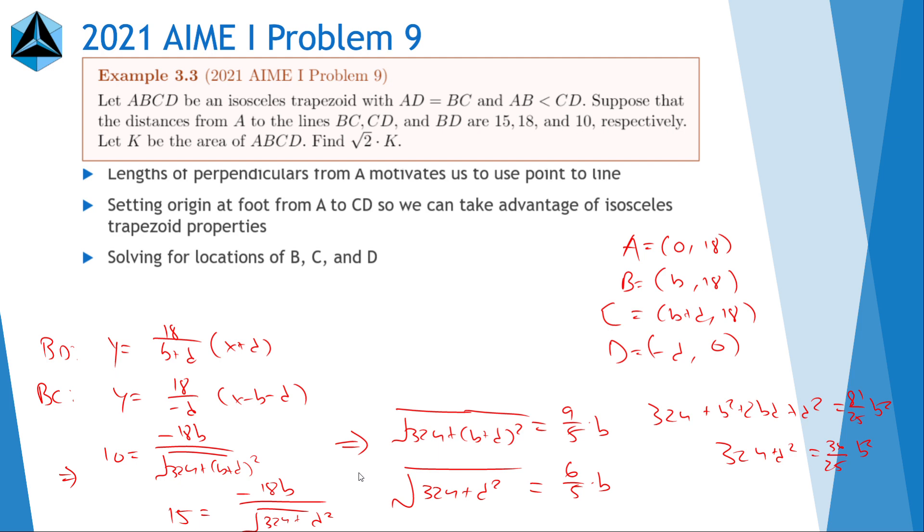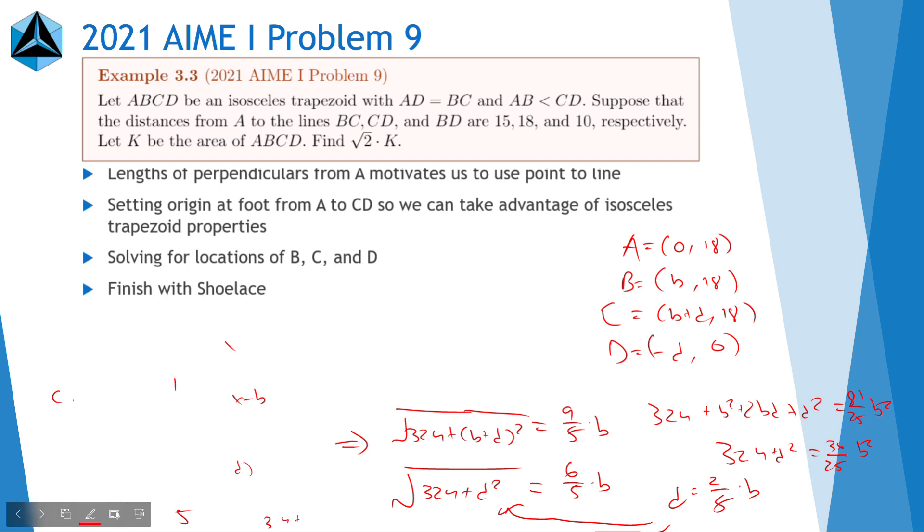Now from here, what we do is we can subtract these two equations and get that D is equal to 2 fifths times B. Now from here, it's pretty straightforward to plug this into this equation over here. And then get that B is equal to 45 over square root of 2 over 4. And D is equal to 9 square root of 2 over 2. So this is our answer.